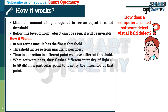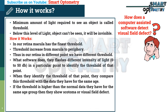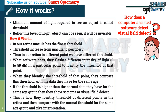What the software does is flash different intensities of light at a particular point to identify the threshold of that point. When they identify the threshold of that point, they compare it with the data they have for the same age group for that particular point. If the threshold is higher than the normal data for the same age group, then they show a scotoma or visual field defect at that point. This is how they identify thresholds of different points in the retina and compare with normal threshold for the same age group to give interpretation.